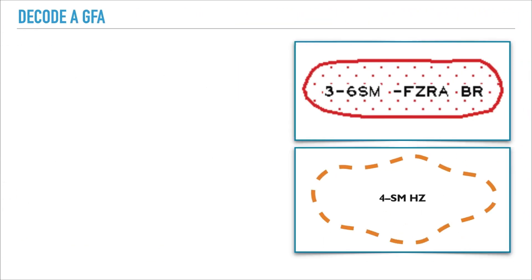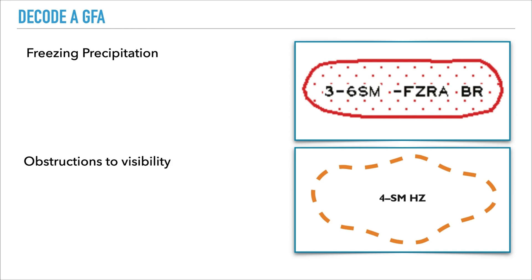The next has to do with freezing precipitation: between three to six statute miles in light freezing rain and mist. The next is obstructions to visibility such as haze or fog, and in that area you have four statute miles of haze.